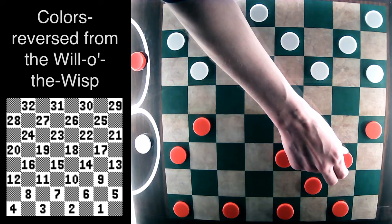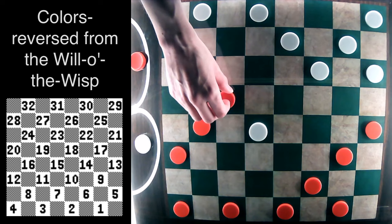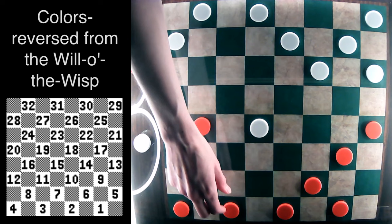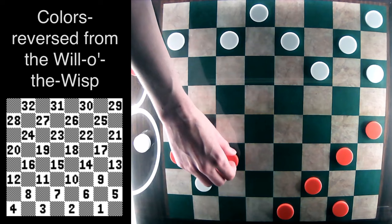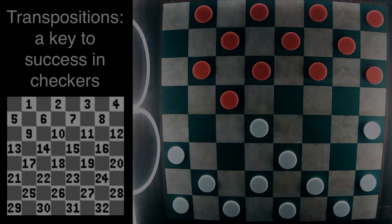After 30-26, 5-9, the 18-15 exchange. 3-7, 32-27, and 7-11. And here we are in that same exact position but colors reversed.